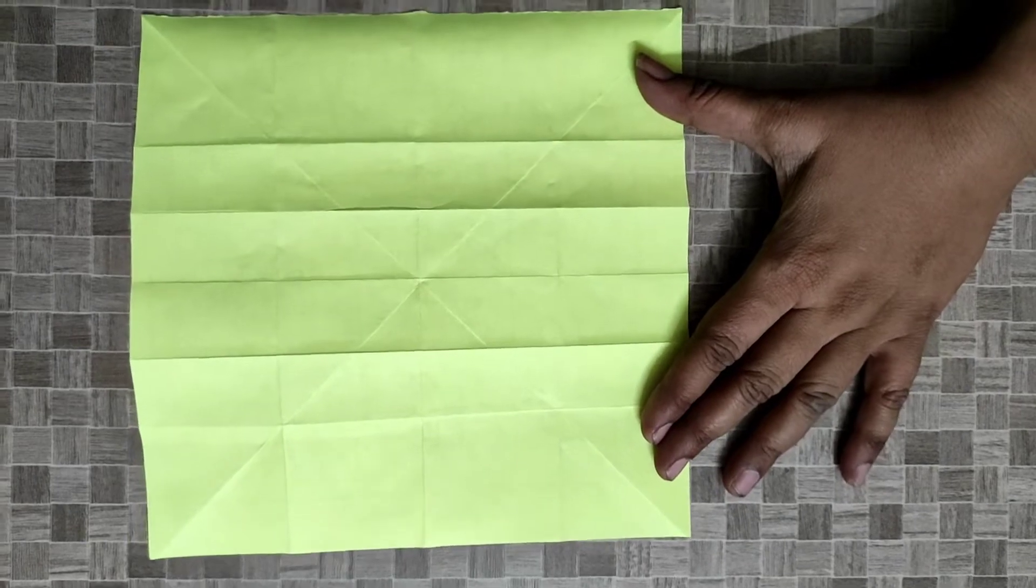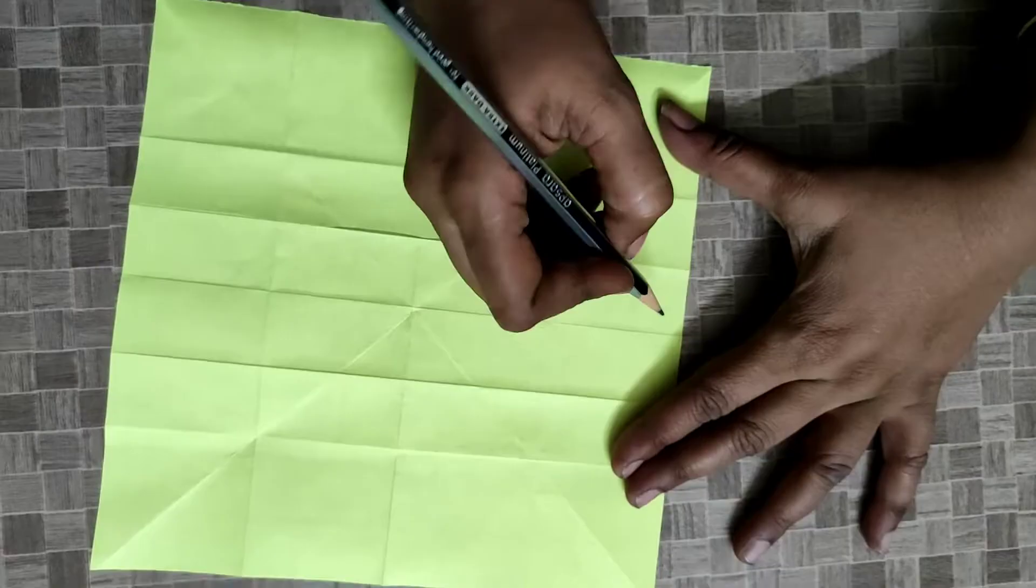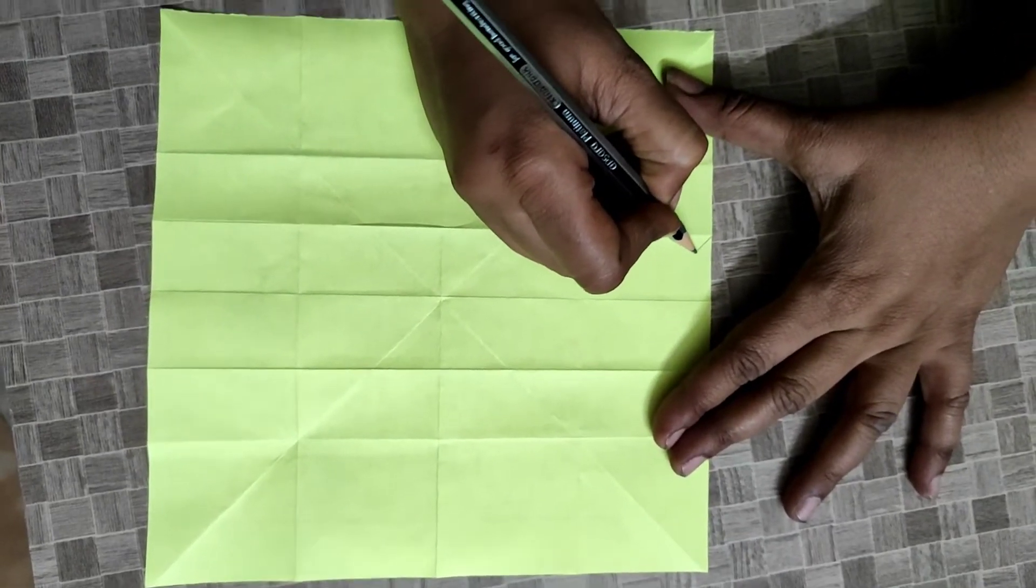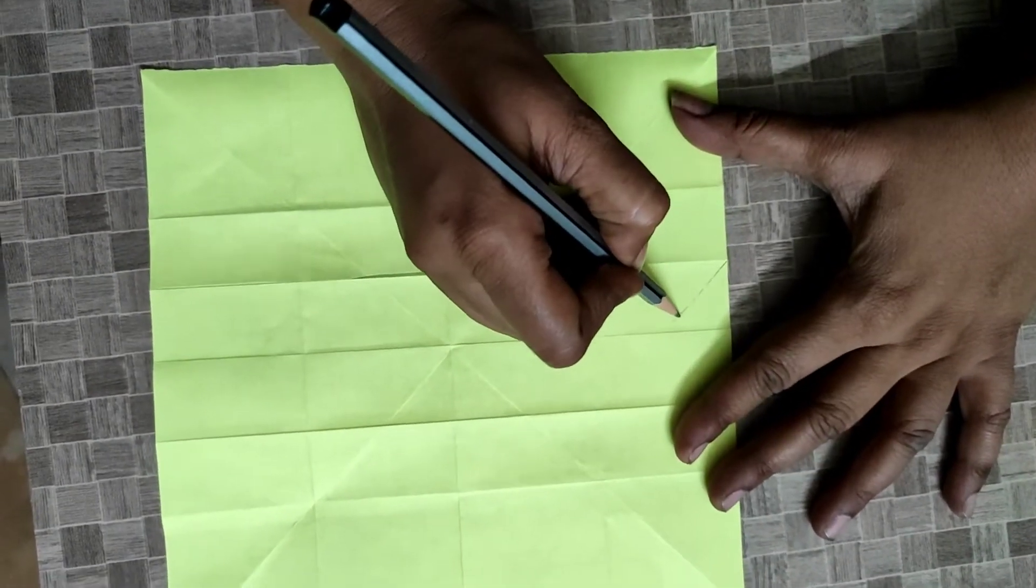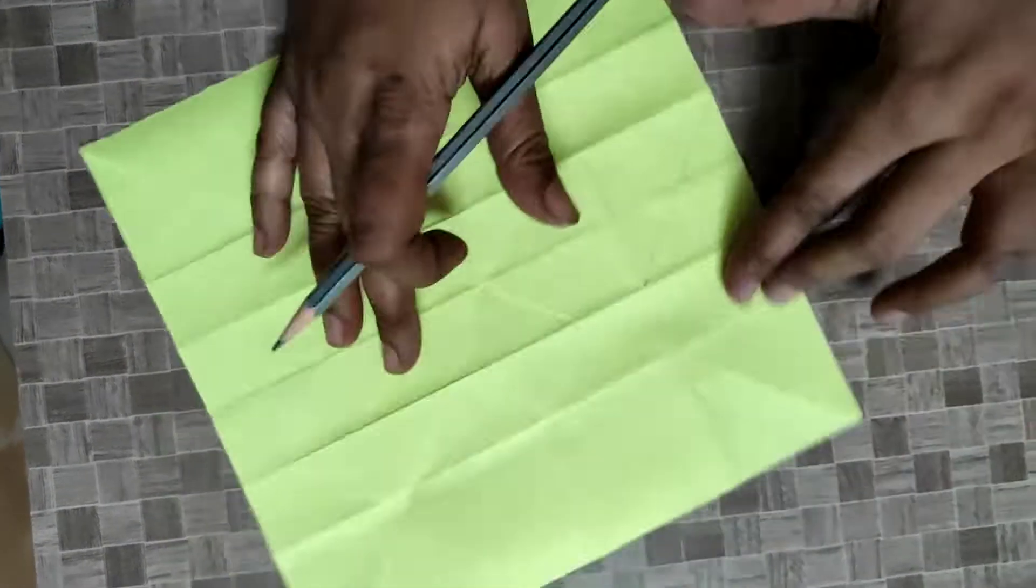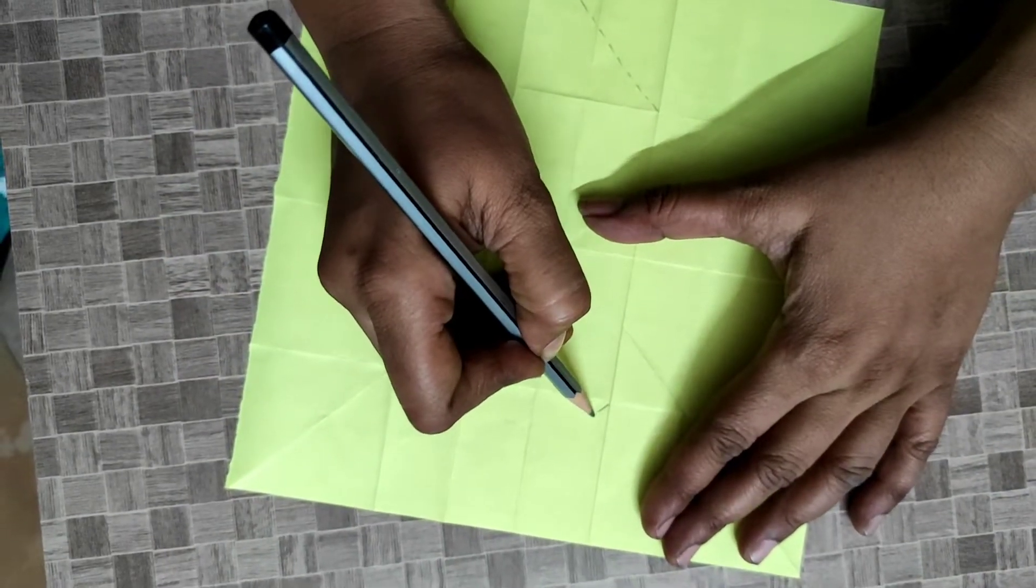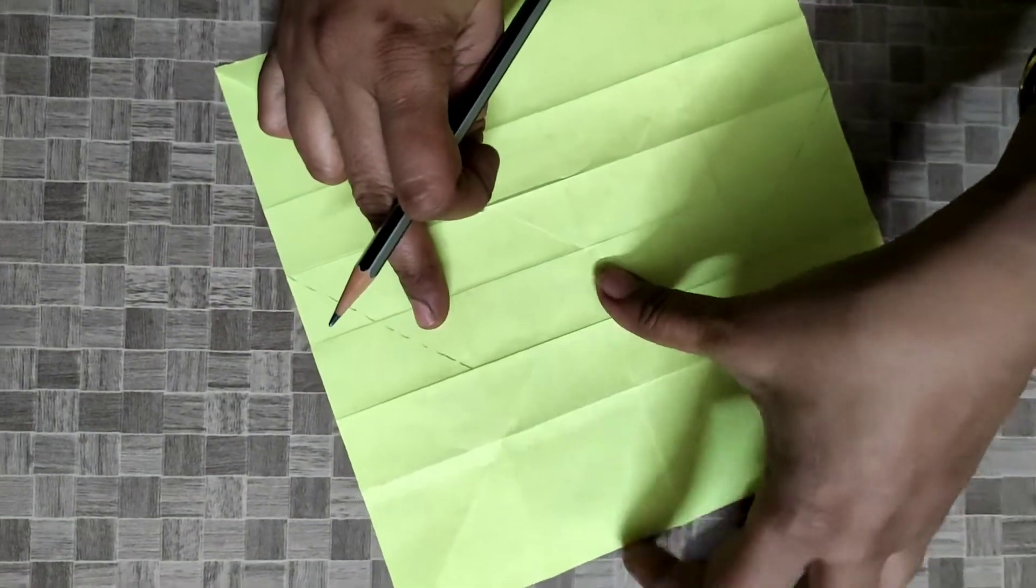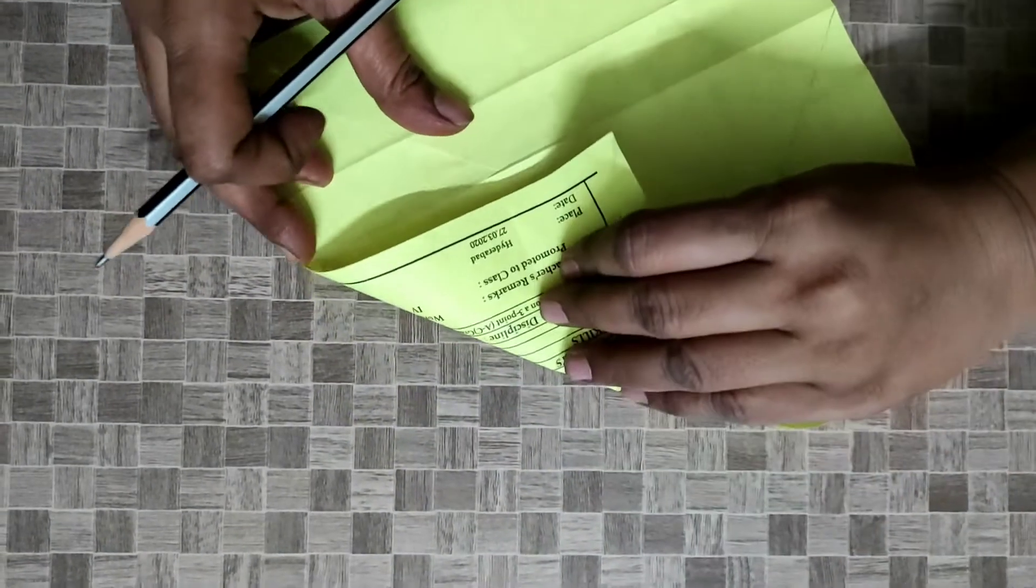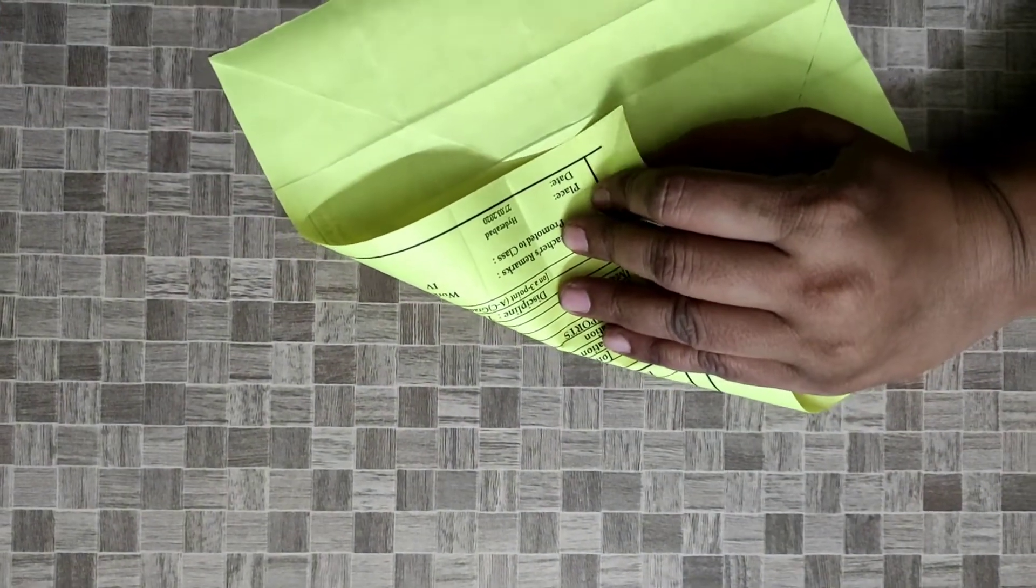Now draw a diagonal line like this. Here also draw another diagonal line. So we have to fold this. From here like this, fold it.